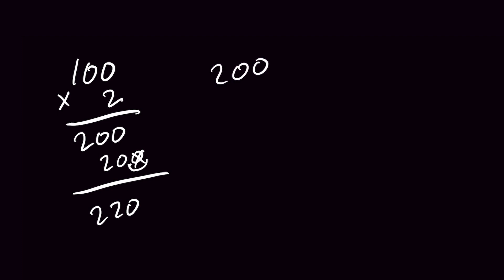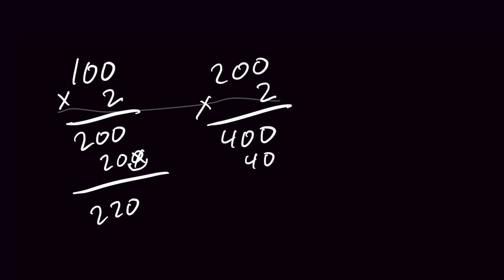Let's go to 200 kilos to pounds. We're gonna take that times 2 — 200 times 2 is 400. Same thing: we're gonna take that number, move the decimal place over one. So that's 400 plus 40, and we are now at 440 pounds.